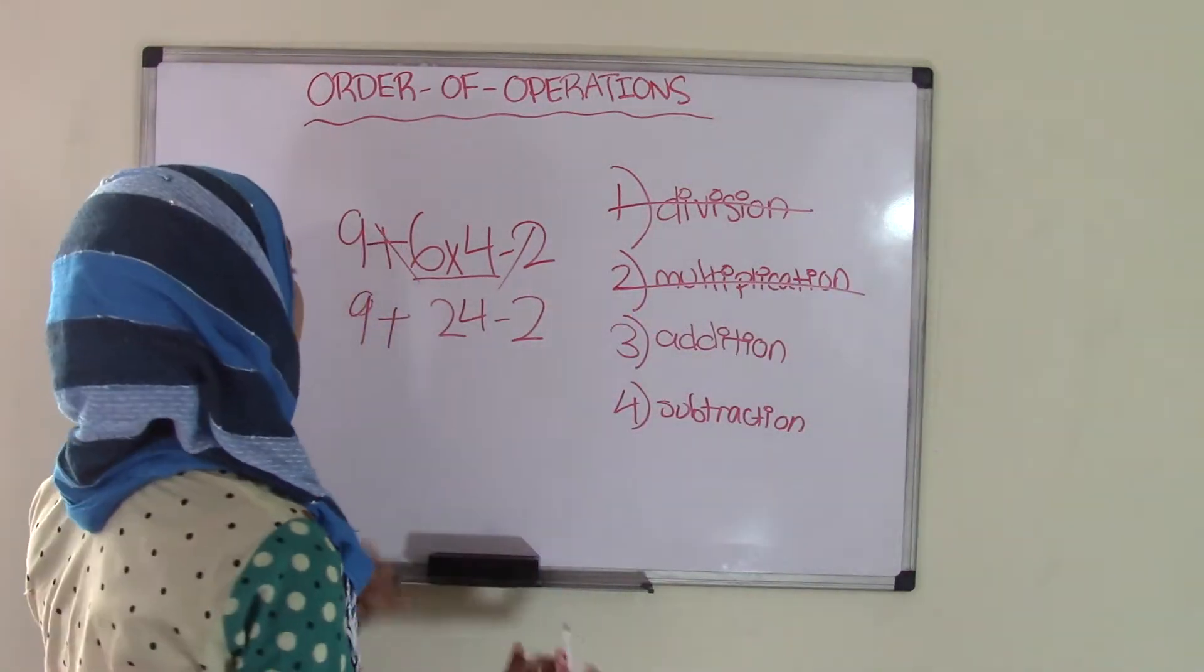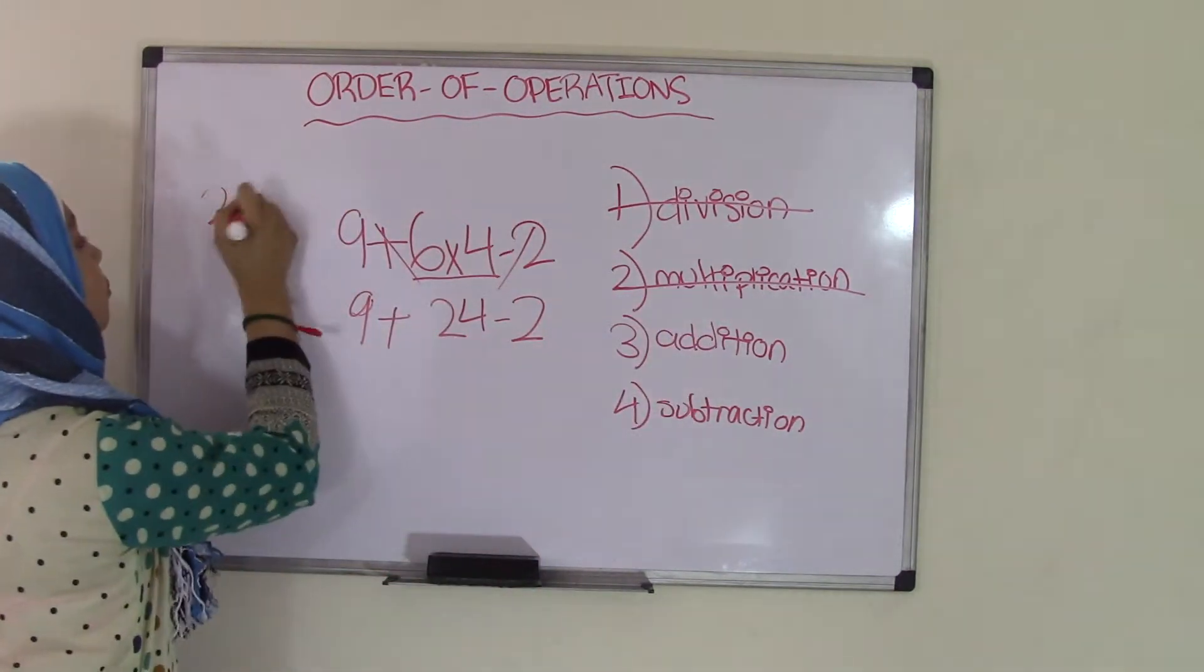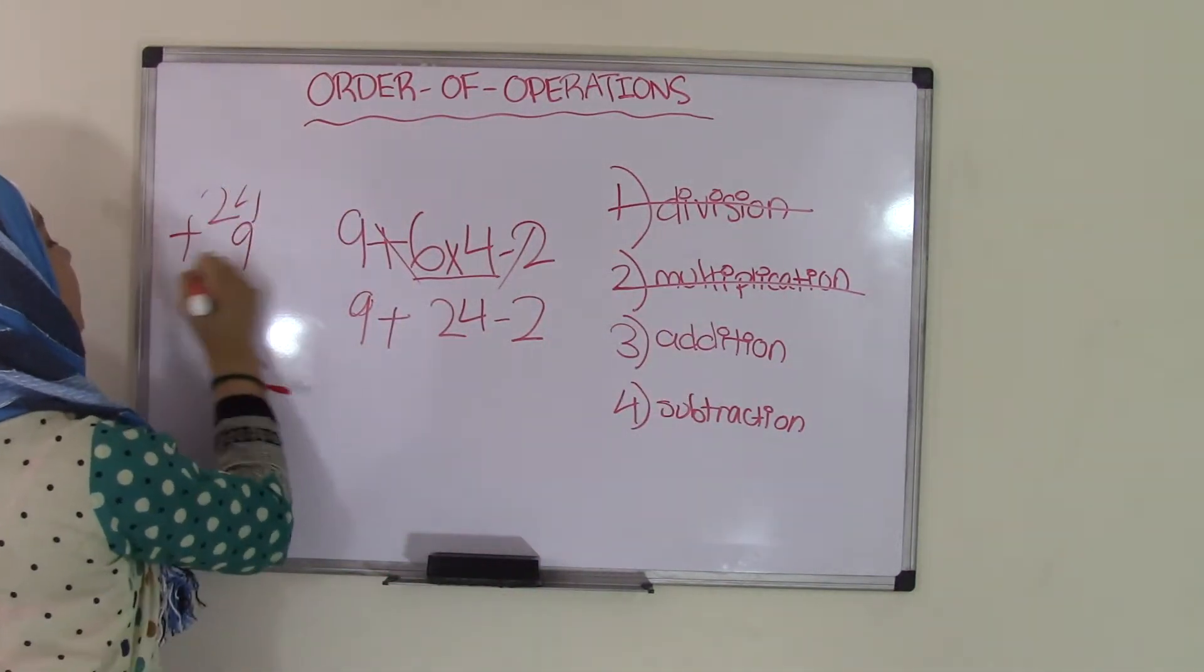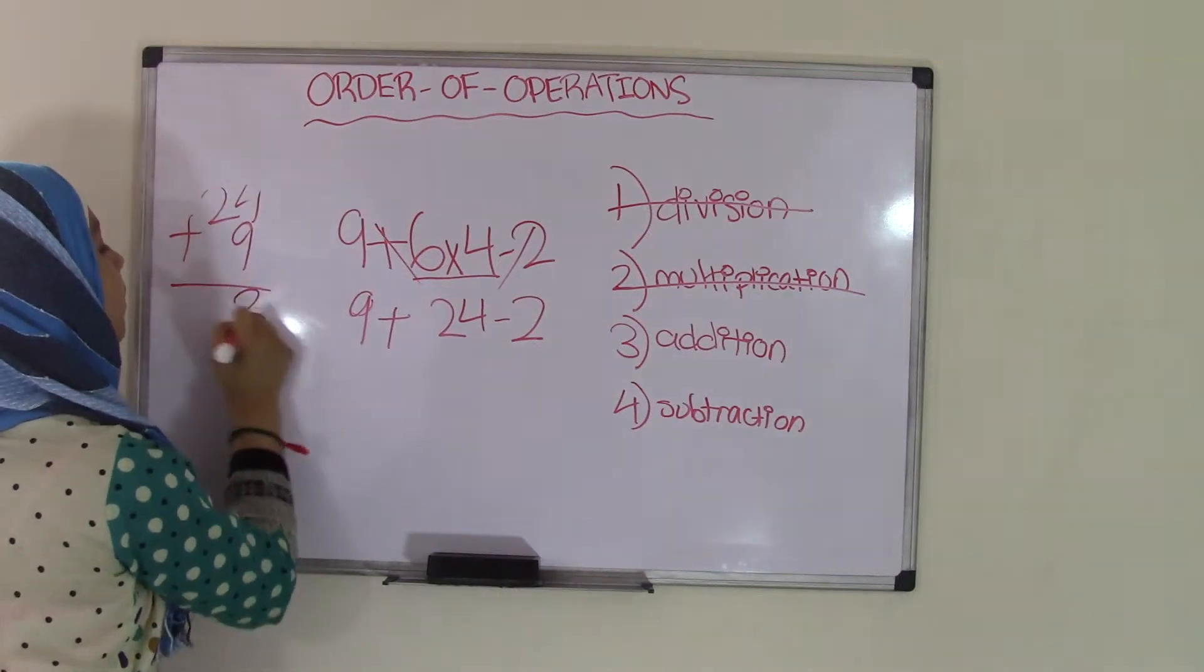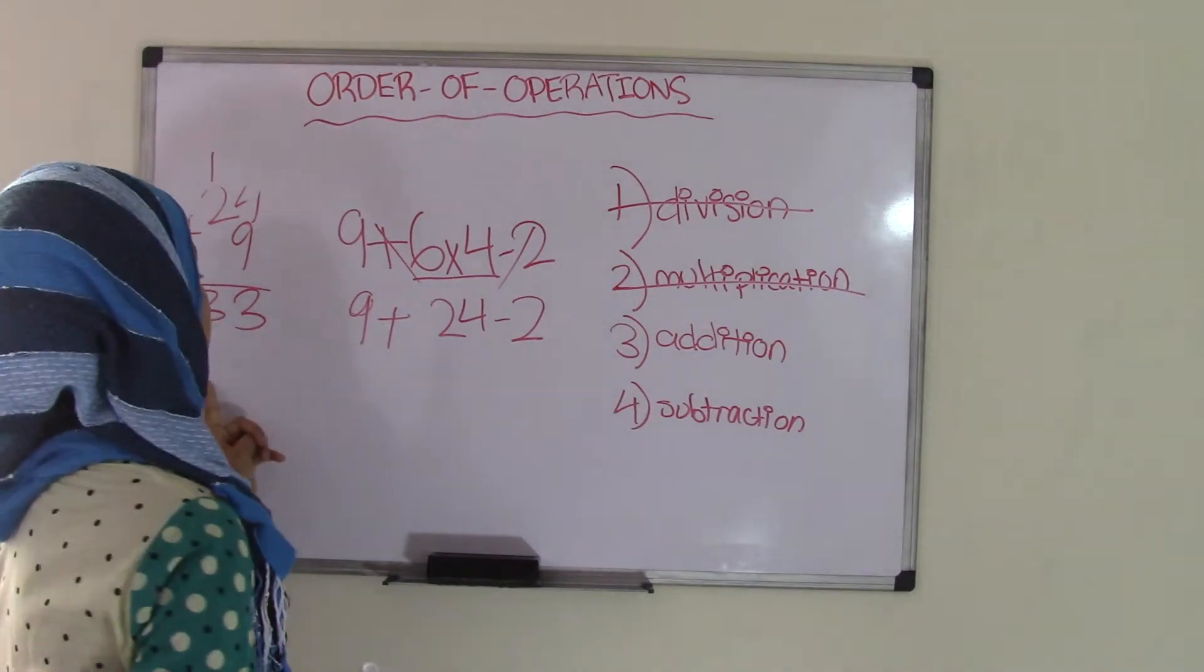Third is addition. So as you can see, we have 9 plus 24. So if we were to do 24 and plus 9, we know that 9 plus 4 is 13, carry the 1, that equals 3. That means the sum of 24 plus 9 equals 33.